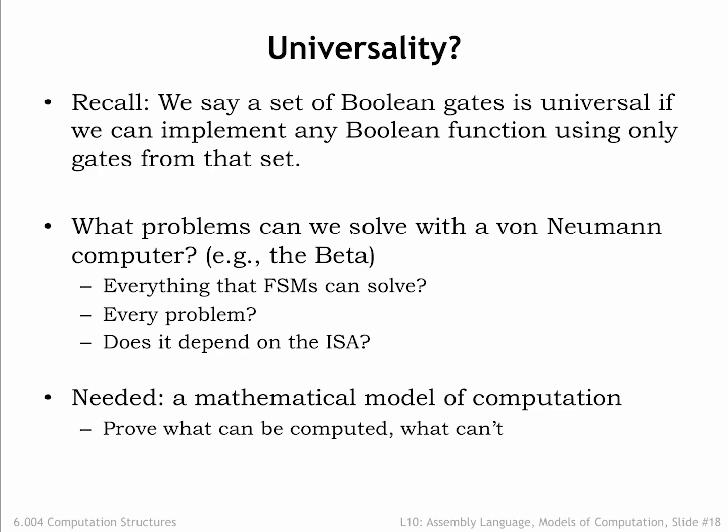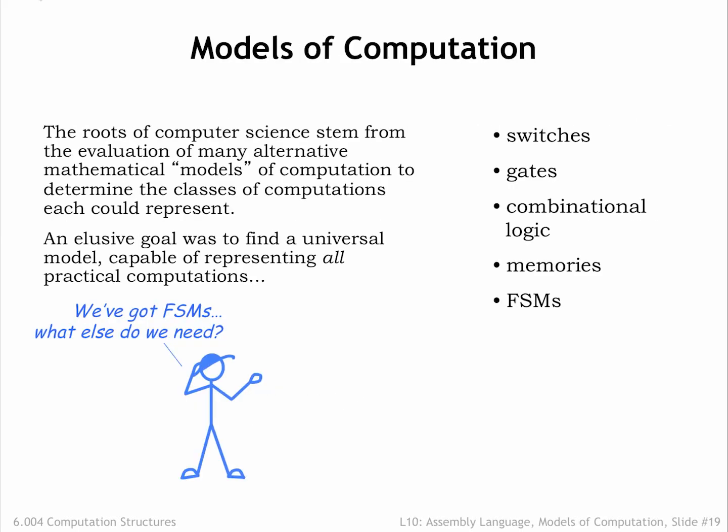Hopefully we can ensure that the beta ISA has the functionality needed to perform any computation. The roots of computer science stem from the evaluation of many alternative mathematical models of computation to determine the classes of computation each could represent. An elusive goal was to find a universal model capable of representing all realizable computations — if a computation could be described using some other well-formed model, we should also be able to describe the same computation using the universal model.